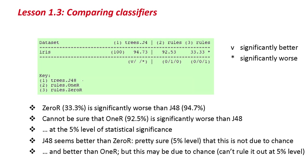The star means that 0R is significantly worse than J48. The absence of a star on 1R means that we cannot be sure that 1R is significantly worse than J48 at the 5% level of statistical significance. In other words, J48 seems better than 0R and we're pretty sure at the 5% level this is not due to chance. It seems to be better than 1R, but this may be due to chance — we can't rule it out at the 5% level of statistical significance.